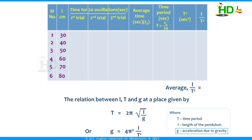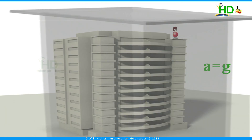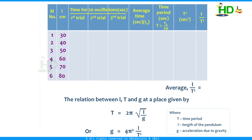Here, g is the acceleration due to gravity. Acceleration due to gravity is the acceleration gained by a freely falling body due to Earth's gravitational force. When a body is falling freely, we consider no other forces are acting on the body. This is the method to determine the value of g using a simple pendulum.